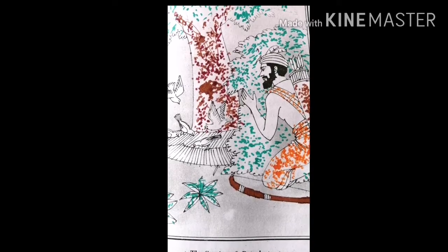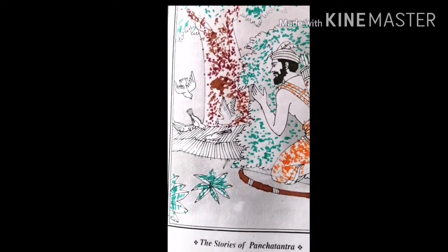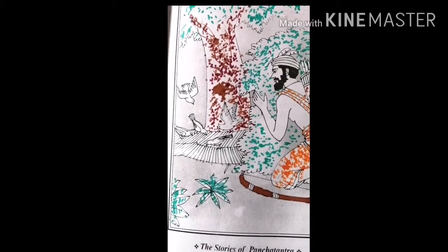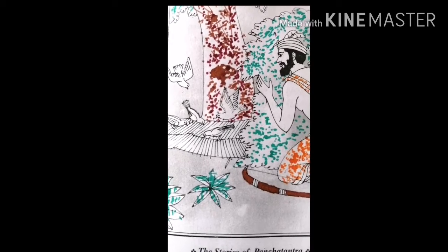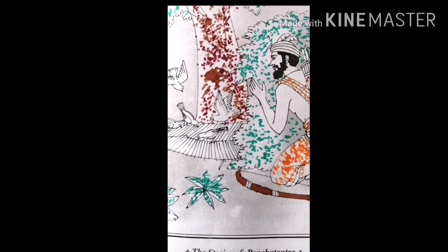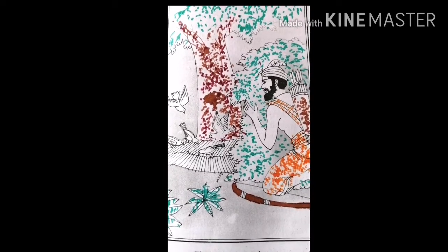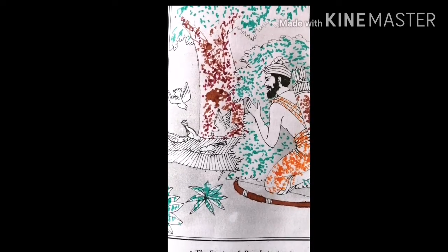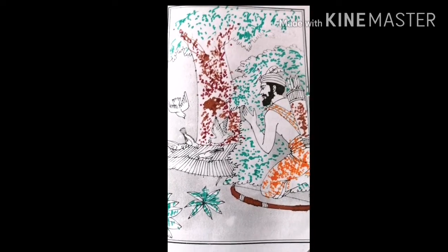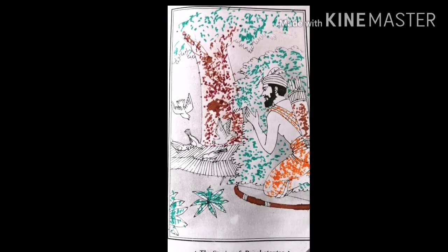But at the same moment, a flock of doves came flying over the banyan tree. They saw the grains of rice strewn around and without losing a moment, they descended on the ground to eat them. When they started eating the grains of rice, a huge net fell over them and all of them were trapped.